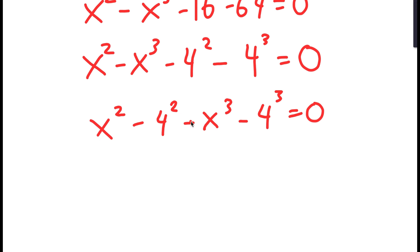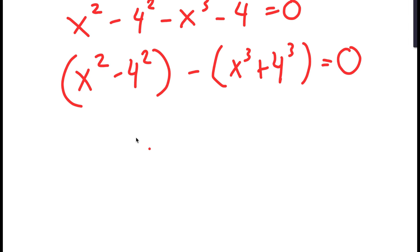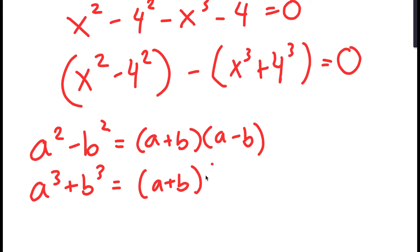I'm going to group x squared with negative 4 squared, and x to the power of 3 with negative 4 to the power of 3. There are two properties I'm going to use: if I have a squared minus b squared, this equals a plus b times a minus b; and if I have a to the power of 3 plus b to the power of 3, this equals a plus b times a squared minus ab plus b squared.